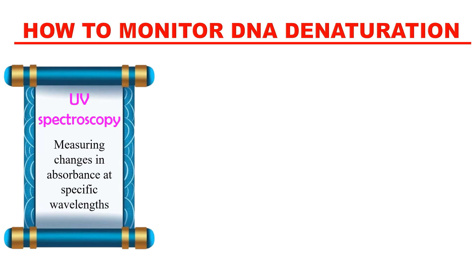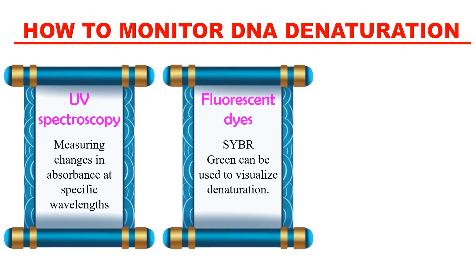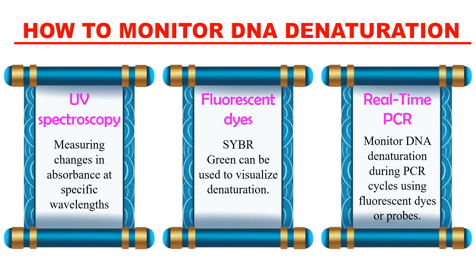If the absorbance increases, we can say that DNA is getting denatured. Next, fluorescent dyes — we can use certain fluorescent dyes like SYBR Green to monitor DNA denaturation. In real-time PCR, we can measure the amount of denaturation in real time using fluorescence-labelled dyes or probes. As denaturation increases, there is an increase in fluorescence, indicating DNA denaturation.